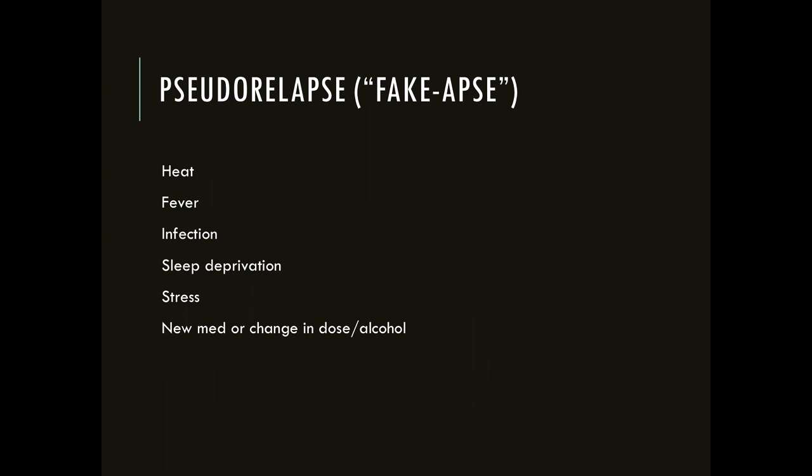Causes of a pseudo-relapse include overheating, stress, fatigue, sleep deprivation, a new medication with side effects, or infection — especially a urinary tract infection, which is a major trigger. Alcohol can also worsen MS symptoms. For example, if you have spasticity in a leg and your doctor gives you a muscle relaxer, the medication might make the leg too loose and weak, feeling like a relapse but actually caused by the medication.